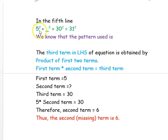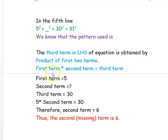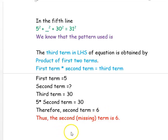In the fifth line, it is given 5² + (dash)² + 30² = 31². The pattern is that the third term equals the product of the first two terms. Here, the first term is 5, the second term is the one we want to find, and the third term is 30. So 5 × second term = 30, therefore the second term is 6. Thus, the missing term in the fifth line is 6.